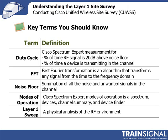FFT stands for Fast Fourier Transformation. You've seen this in the spectrum plots. Fast Fourier Transformation takes the received signal, which arrives in the time domain, and translates it to the frequency domain so we can look at the received power level across the frequency band — across the 2.4 GHz band and also the 5 GHz band using the Cisco Spectrum Expert.